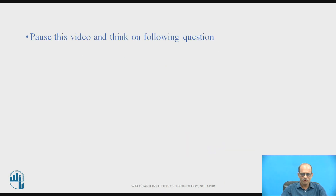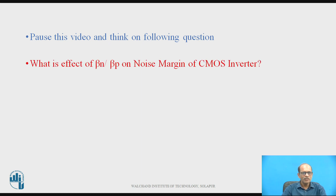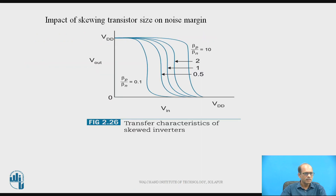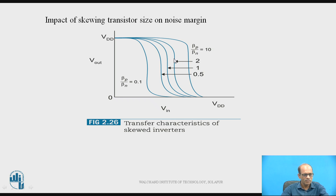Pause this video and think on the following question: What is the effect of beta_N by beta_P on the noise margin of the CMOS inverter? We have already discussed the effect of beta_N by beta_P on the DC characteristics. Whenever beta_N by beta_P is 1, this is the corresponding curve. When beta_N by beta_P is decreased, the characteristic is shifted toward the left, and when it is increased, the characteristic is shifted toward the right.